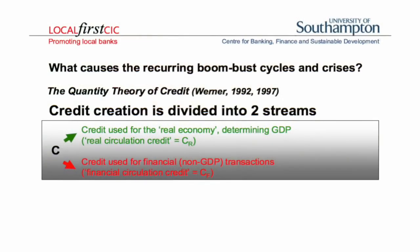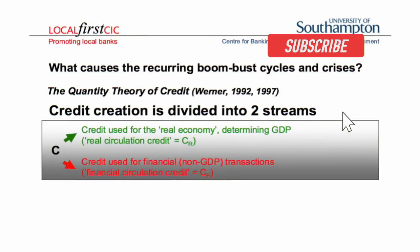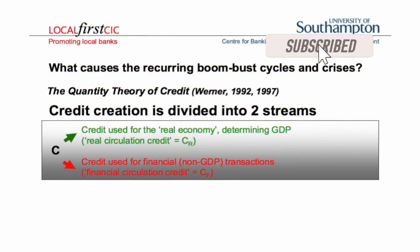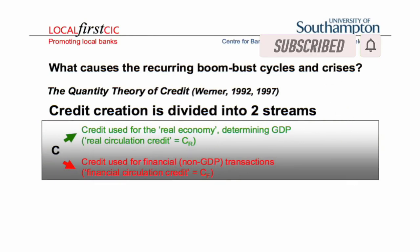Briefly, what causes the recurring boom and bust cycles, and what is the role banks are playing? Banks create the money supply, and you can divide the money creation into two streams.